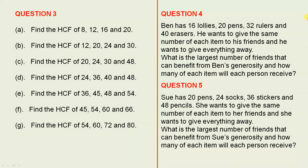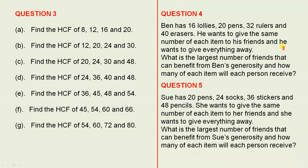As mentioned in the lesson, there are some problems here showing how to apply the highest common factor to an everyday problem. Question 4: Ben has 16 lollies, 20 pens, 32 rulers, and 40 erasers. He wants to give the same number of each item to his friends and give everything away. What is the largest number of friends that can benefit from Ben's generosity, and how many of each item will each person receive? We employ the idea of highest common factor to solve this. If you have any difficulty, just refer to the lesson on highest common factor.